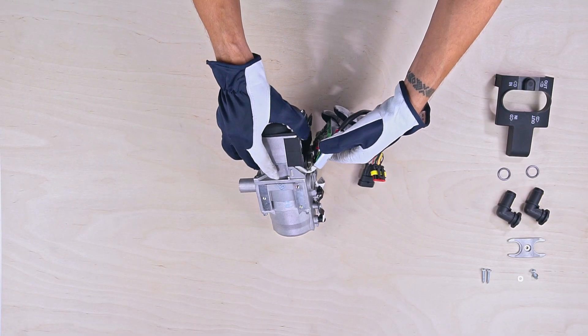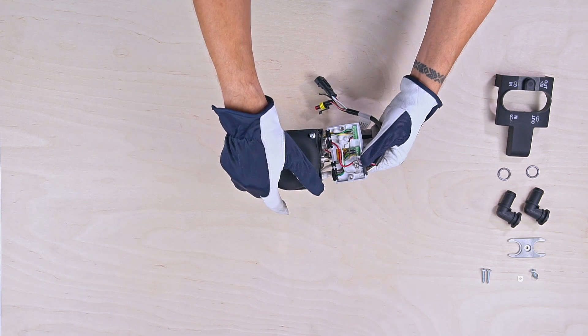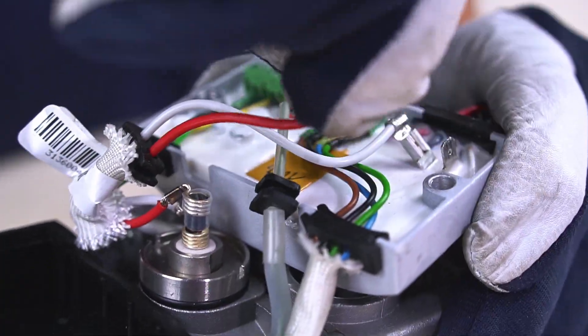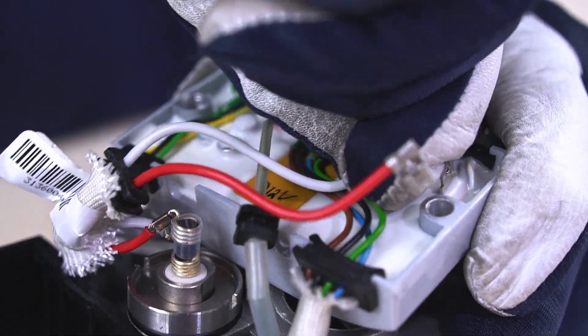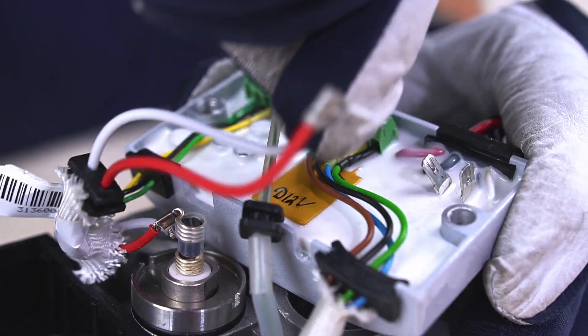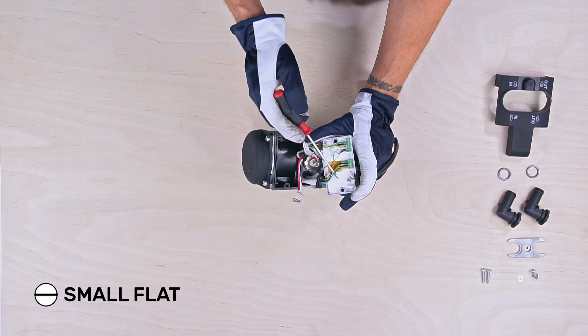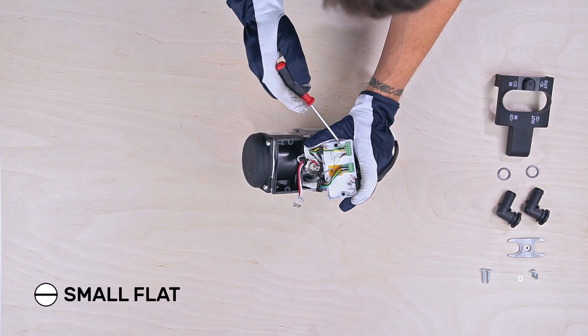Lift the control unit to get to the connectors. Take off the glow plug crimp connectors. For this heater, the glow plug polarity works both ways. Next, remove the air pump wires.